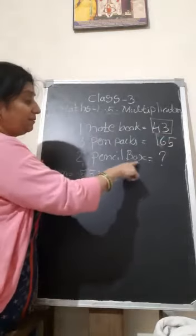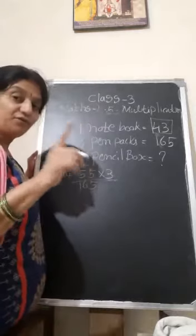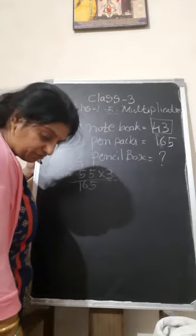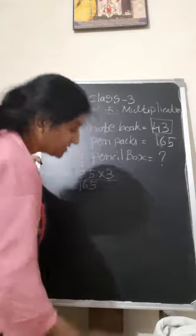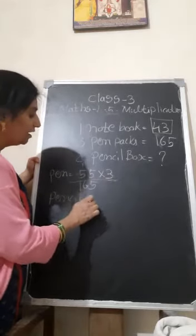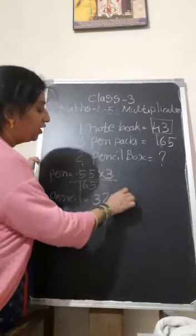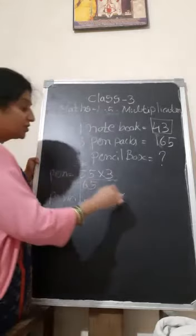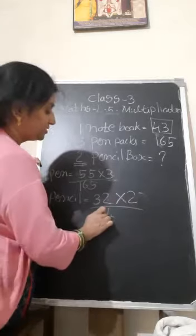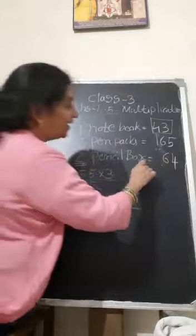Now two pencil box. How much she has to pay for the two pencil box? What is the cost of the one pencil box? According to this, one pencil box rupees 32. Here you have to do pencil. How much? One pencil box cost is rupees 32. How many she is going to buy? Two. You have to multiply with the two. What is the answer? Two twos are four, three twos are six. We got the answer 64.